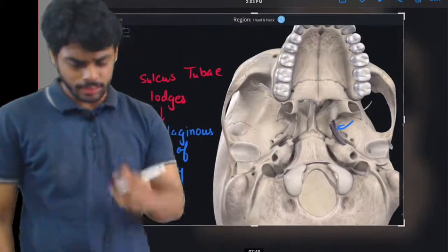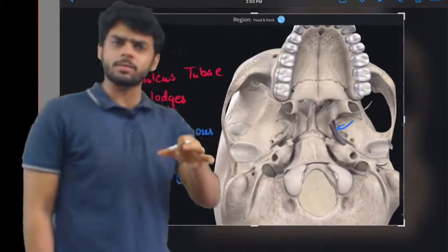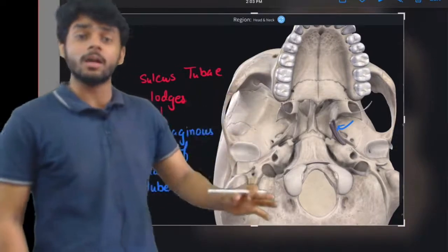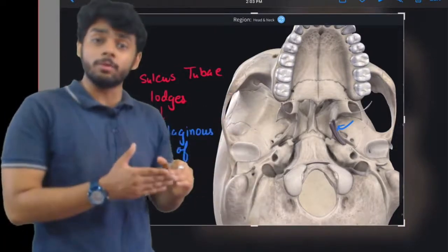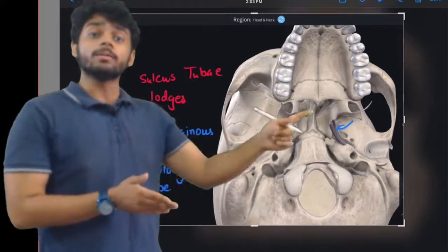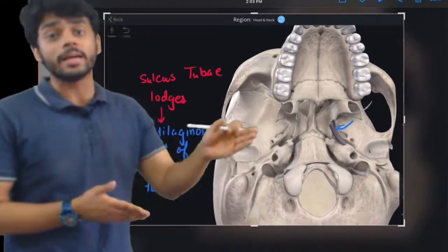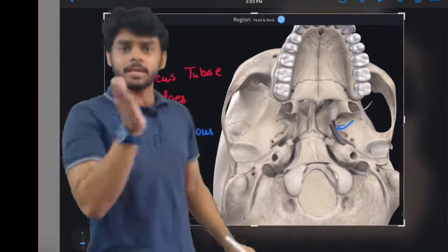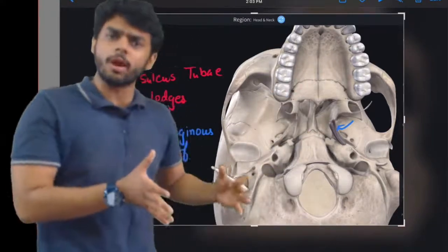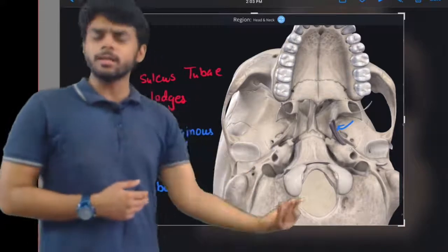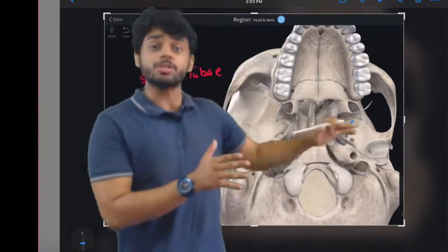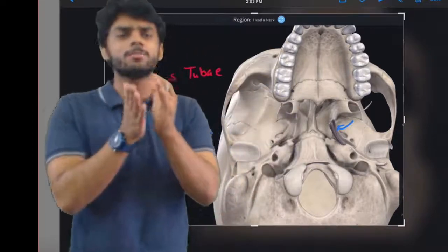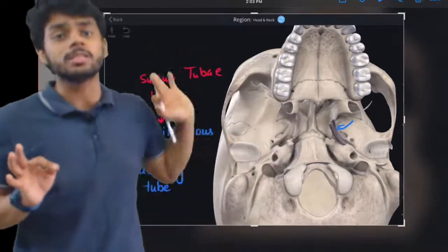Here we have discussed almost all the parts of the sphenoid bone related to Norma Basalis — both the pterygoid part and the greater wing part which can be seen from the Norma Basalis view. We will study the sphenoid bone in detail in another lecture, but all structures necessary from the Norma Basalis point of view have been covered.